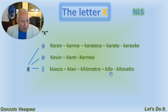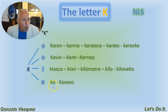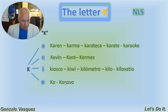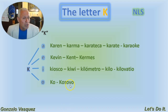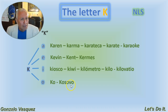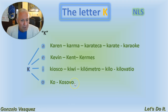Now with O, the sound is KO. Kosovo — we don't have anything in Spanish that starts with K-O naturally. Kosovo is from the old Yugoslavia; everybody knows what Kosovo is.